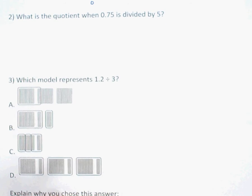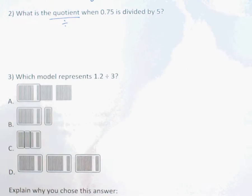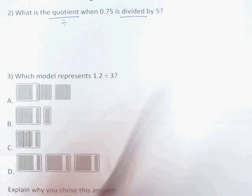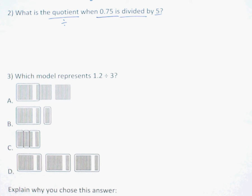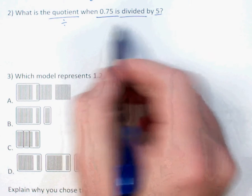Number two is pretty straightforward — it's asking for the quotient. If I've got the word 'quotient,' I know I'm dividing. Seventy-five hundredths is divided by five. The problem comes when we set this up, because I've got two numbers and on a standardized test, if I set it up incorrectly, it's going to give me that as a wrong answer choice — our trick answer. So I've got to make sure I get this set up correctly.